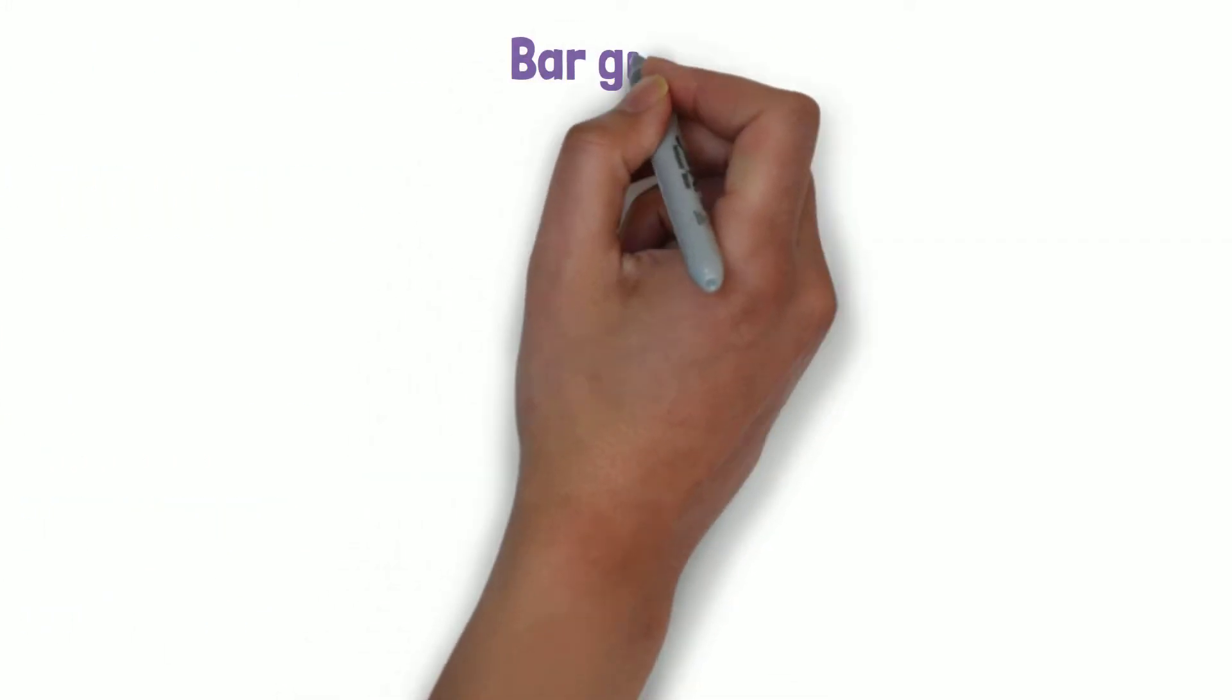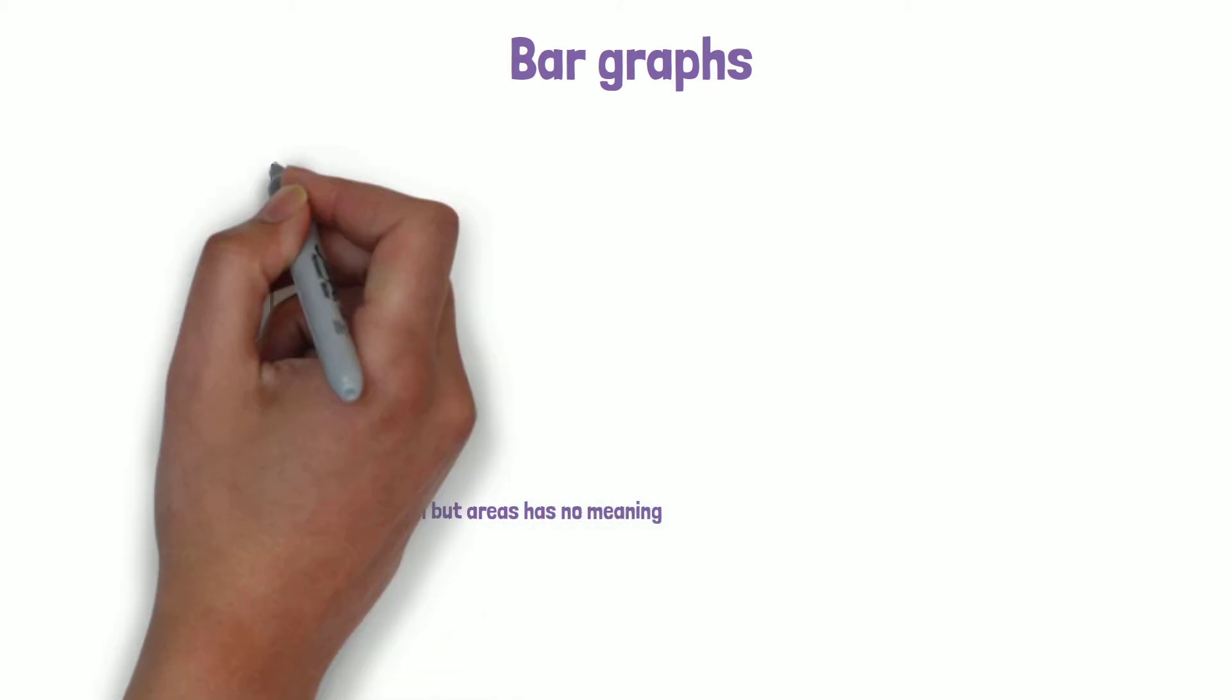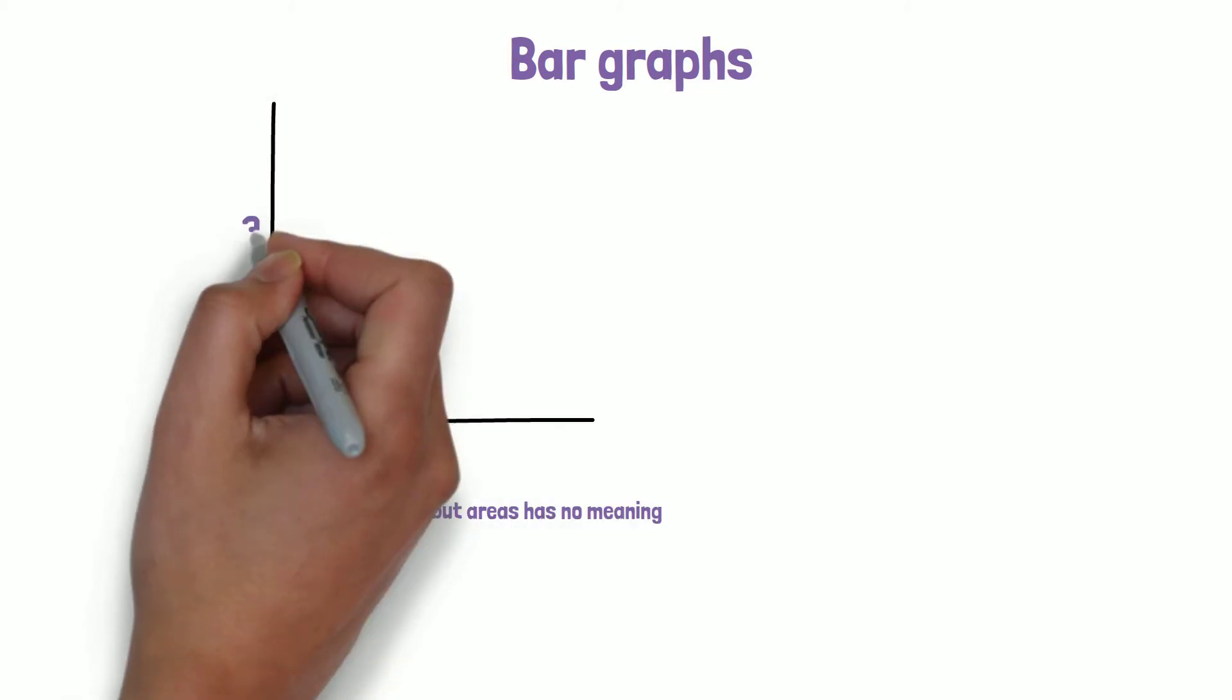Bar graphs are used to present categorical data, similar to a histogram, but the area has no meaning. Here plain numbers are shown, to compare groups or show trends.